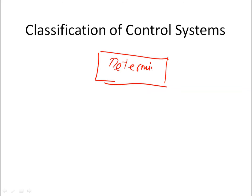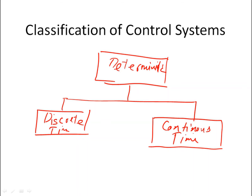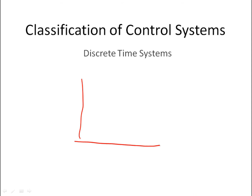Once we decide on deterministic systems, we classify further into discrete time and continuous time. In a discrete time system, the system is defined with an input for which different outputs are seen at specific sampling instances. Time can be expressed as t = kT, where k takes values 1, 2, 3, up to some value n, and T is the sampling period.